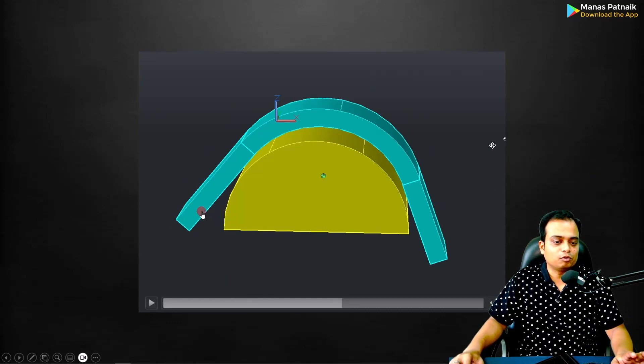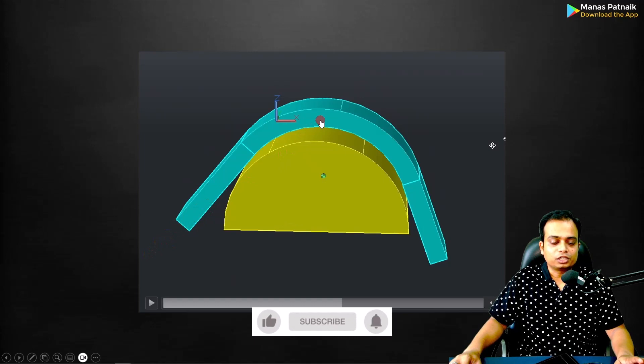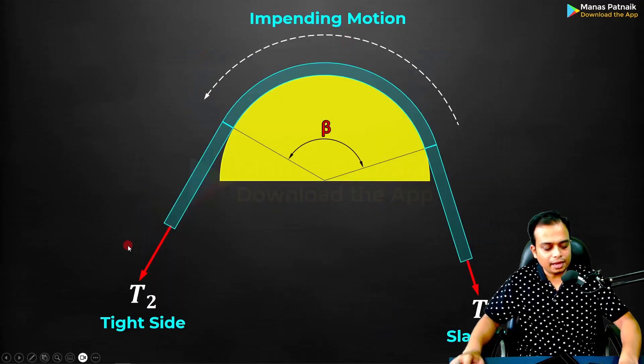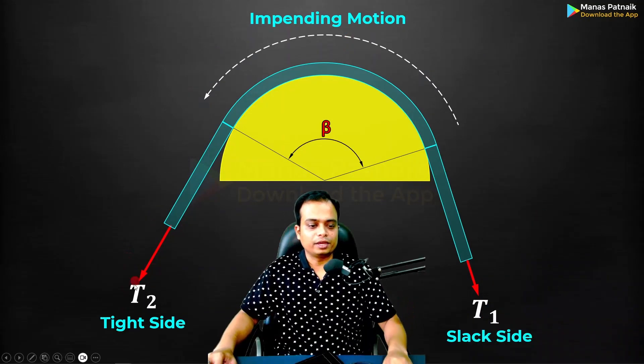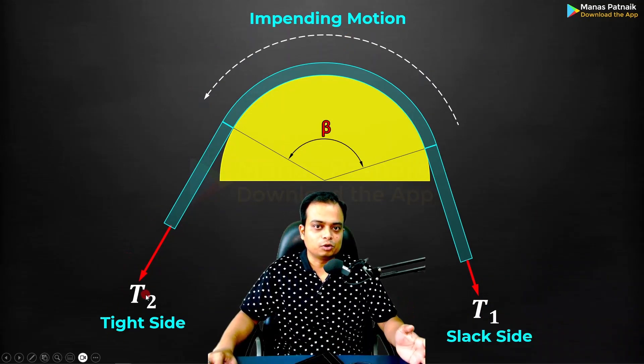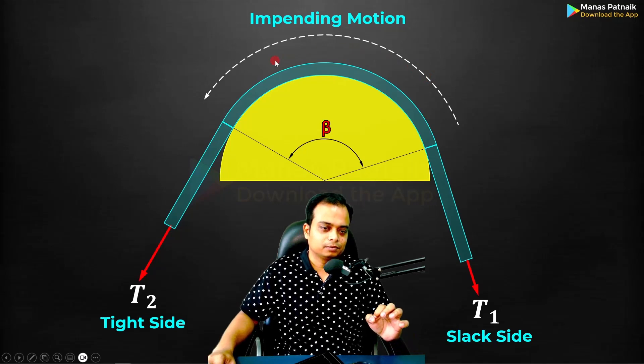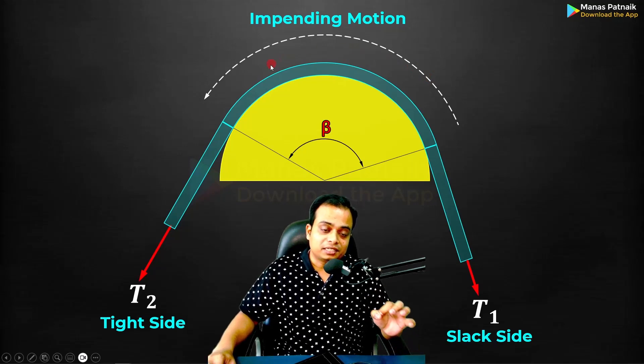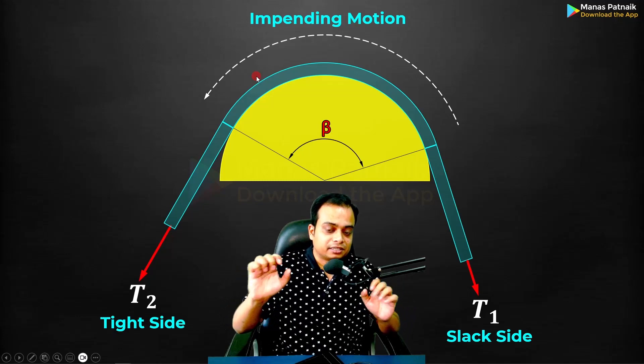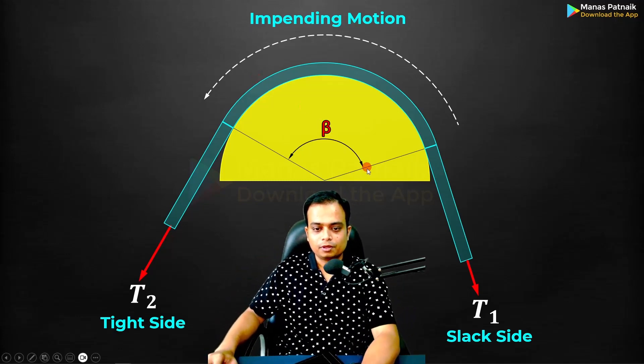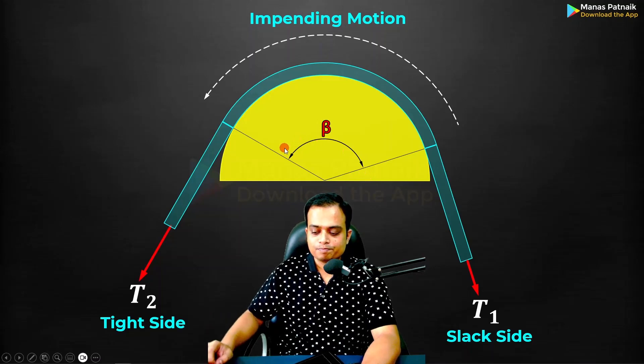What we want to do is apply sufficient force over here so that motion impends somewhere along this direction. We want to apply sufficient force—obviously this is going to become the tighter side—so that motion will impend to the left. How much is that minimum force? This is something we are interested in.